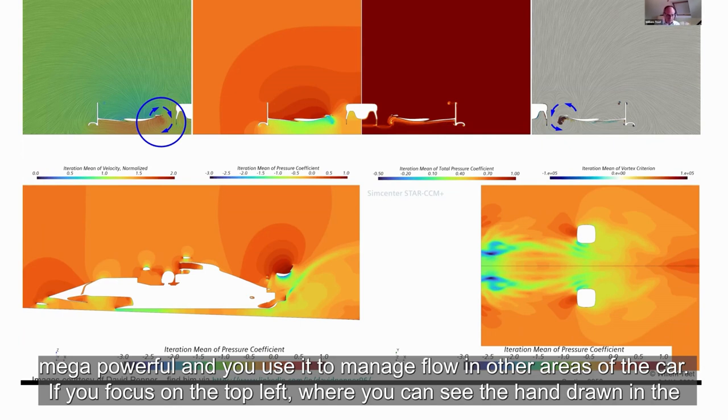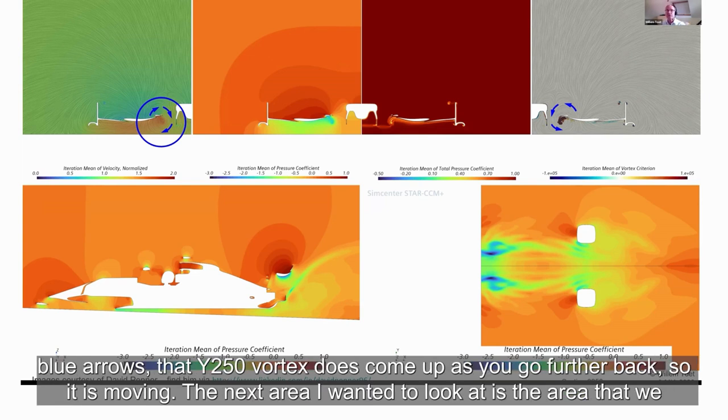That Y250 Vortex, if you focus on the top left where you can see the hand-drawn circles and the blue arrows, does come up as you go further back. So it is moving.